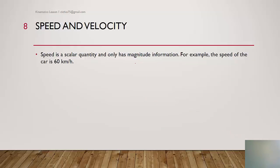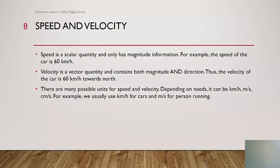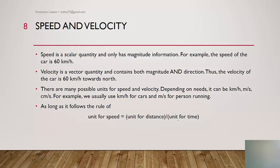Next, speed and velocity — similar to distance and displacement. Speed is a scalar and only has magnitude; for example, the speed of a car is 60 kilometers per hour. Velocity is a vector quantity containing both magnitude and direction — 60 kilometers per hour towards north. There are many possible units for speed and velocity depending on needs: kilometers per hour, meters per second, or centimeters per second. The default SI unit is meters per second, as meter and second are SI units for distance and time.